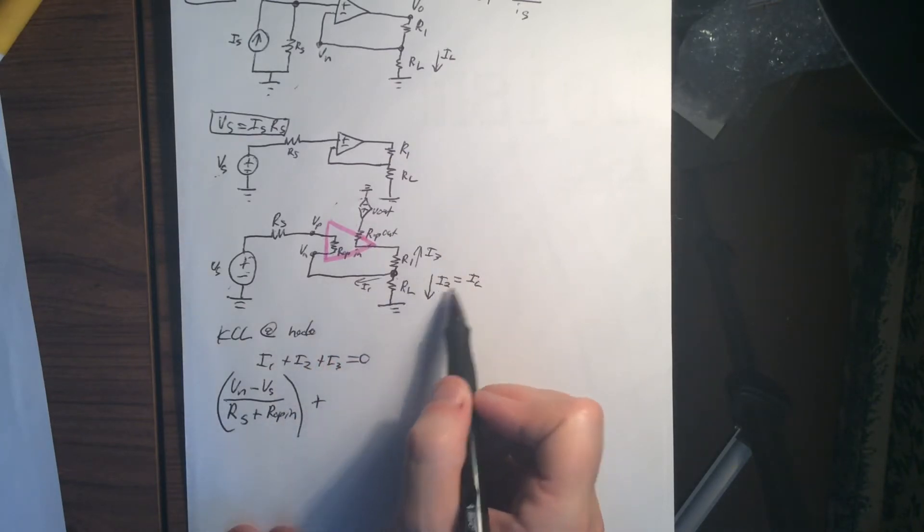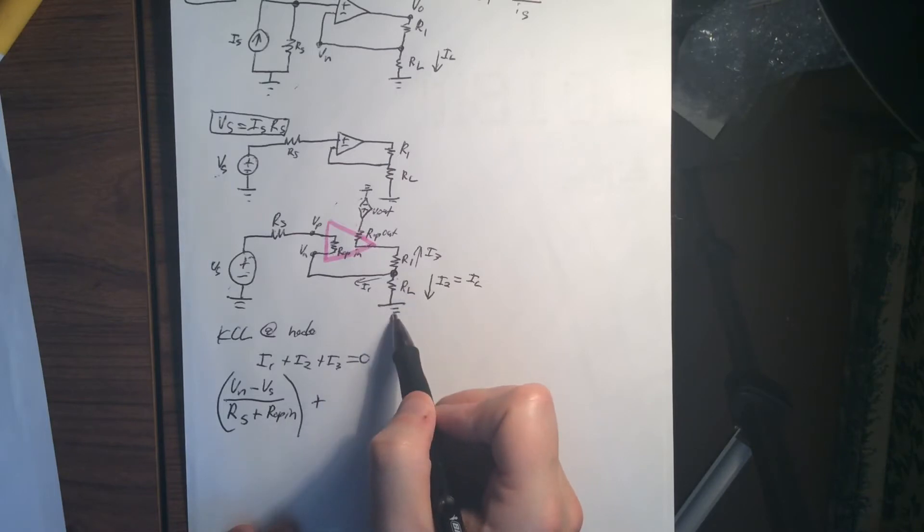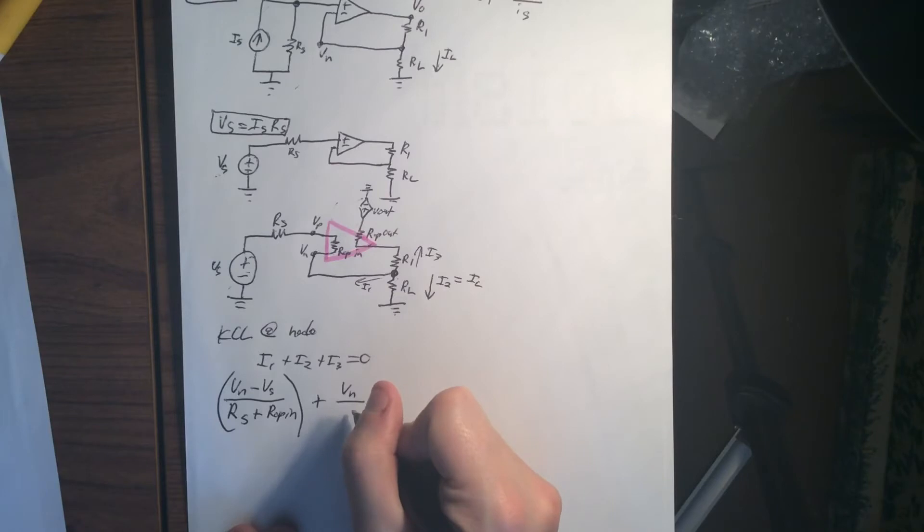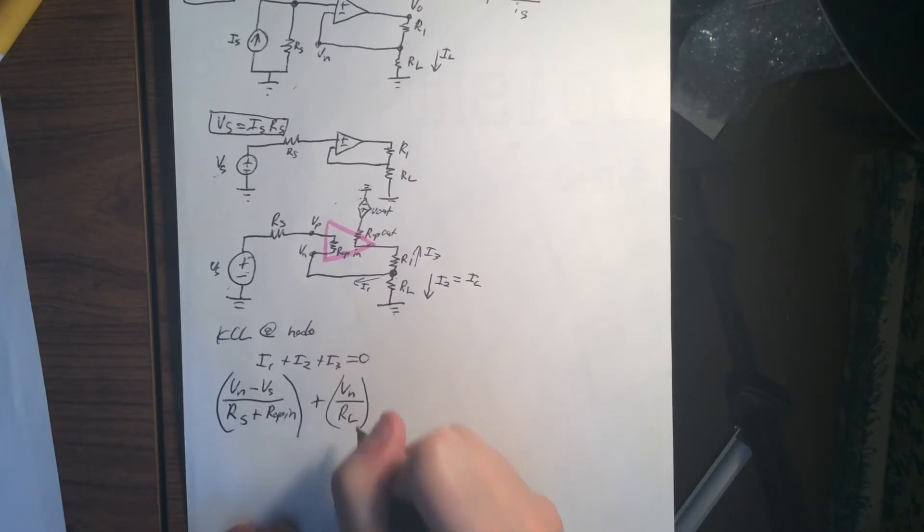Now we're going to do our next one, i2 or IL, which is really easy. That's just this voltage drop over this. So this is going to be VN over RL.